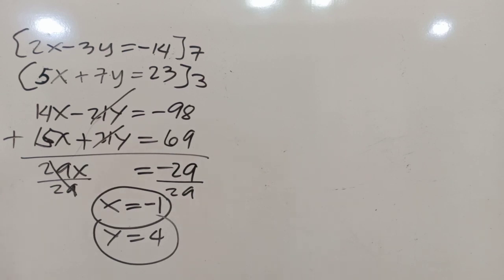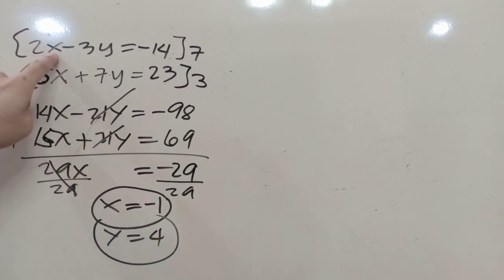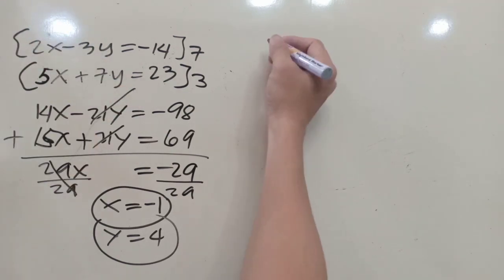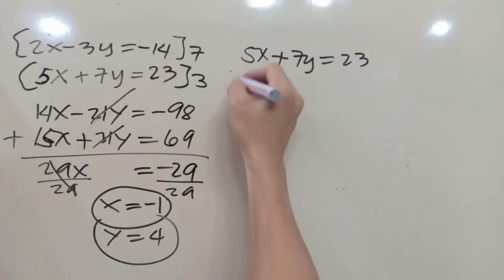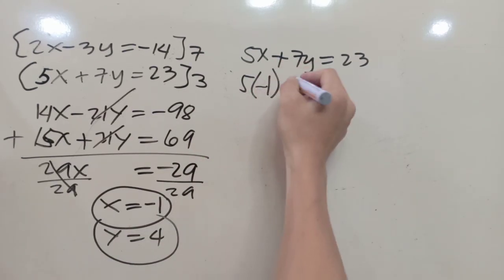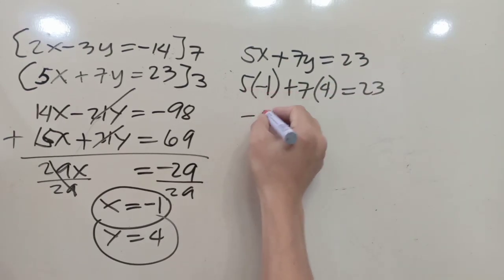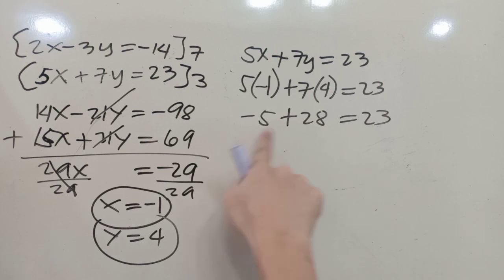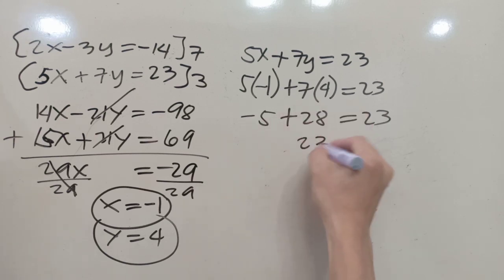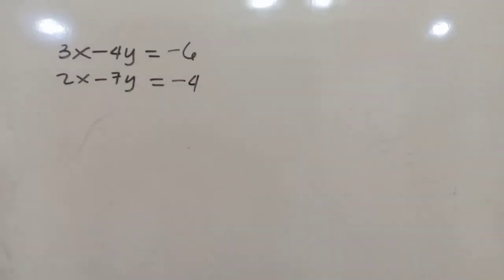Let's check by substituting into the second equation: 5x plus 7y equals 23. So 5 times negative 1 plus 7 times 4 equals 23, giving negative 5 plus 28 equals 23. Since 23 equals 23, our answers are correct.